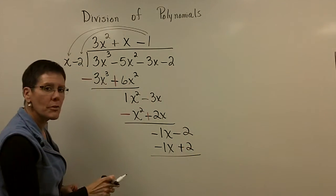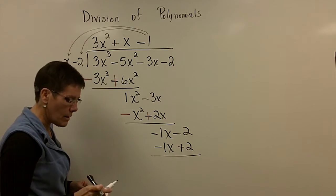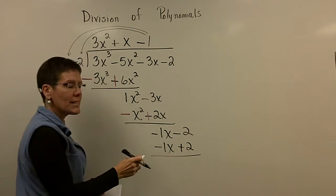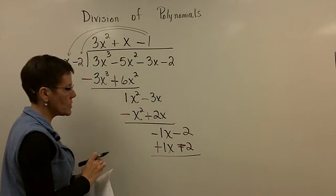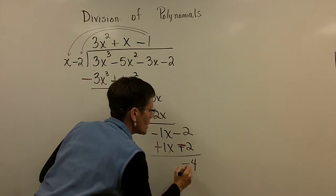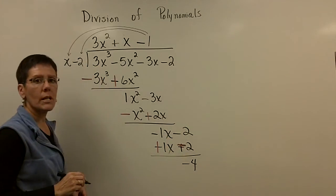The minus 1 times a minus 2 is a positive 2. And then you've got to subtract. Sometimes people at the very end are excited and they're done. They think they're all set and they forget to subtract. You've got to change this sign and change this sign because this one doesn't have a remainder of 0. This one has a remainder of a negative 4. A negative 2 and a negative 2 is a negative 4.